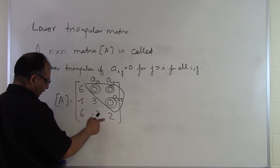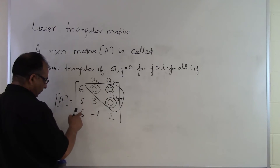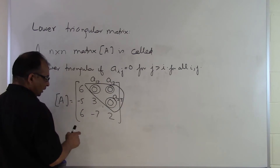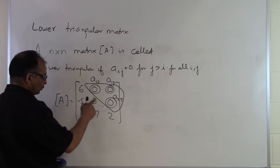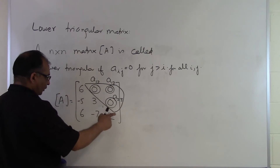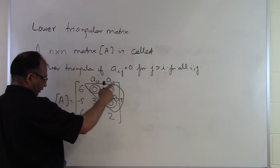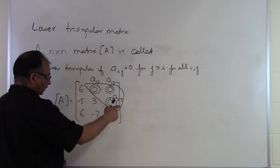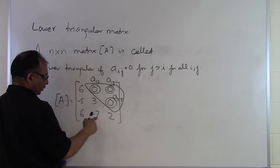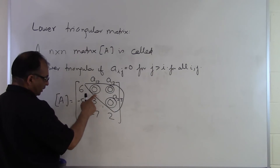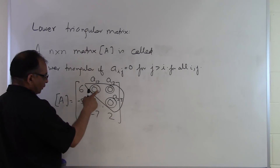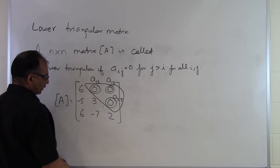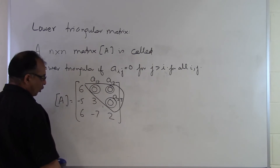Many students think that if there is a zero somewhere in the elements on or below the diagonal, then it's not considered to be a lower triangular matrix — but that's not true. Whether a square matrix is lower triangular is dictated by what's above the diagonal: are those elements, where the column number is bigger than the row number, all zero?